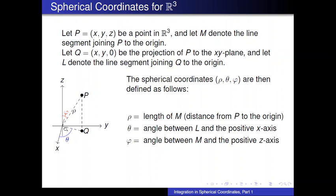Rho is the radius in space — the length from the origin to P. Theta will be the angle between L and the positive x-axis. L is the line segment joining the origin to Q, so theta plays the exact same role it played in polar coordinates: it's the angle between the positive x-axis and the ray joining the origin to the projection of P onto the xy-plane. Last but not least, phi is the angle between M and the positive z-axis — the offset angle that line segment M makes with the positive z-axis.